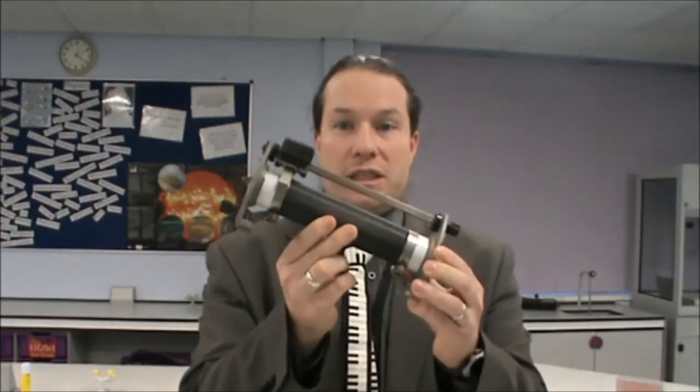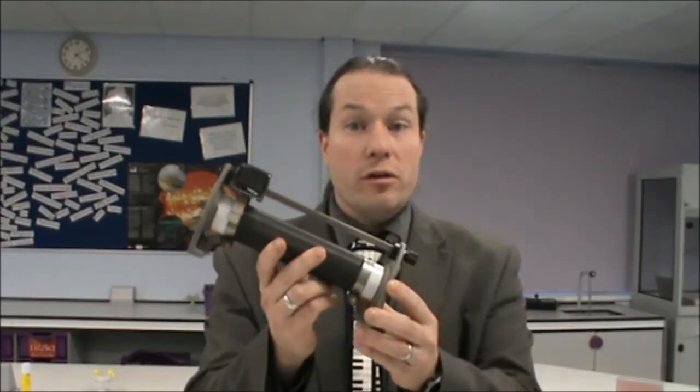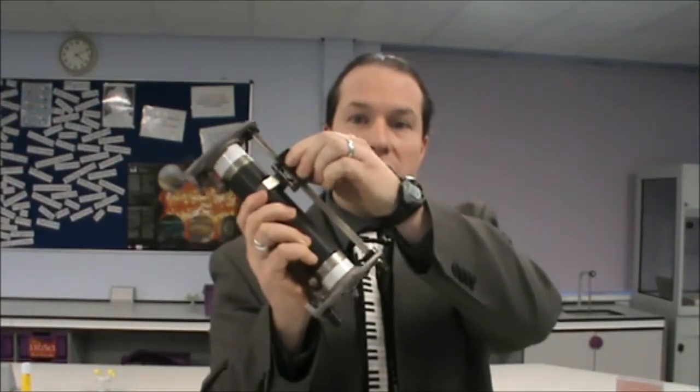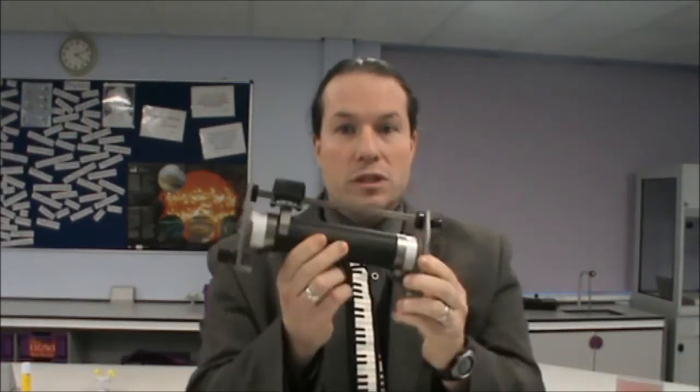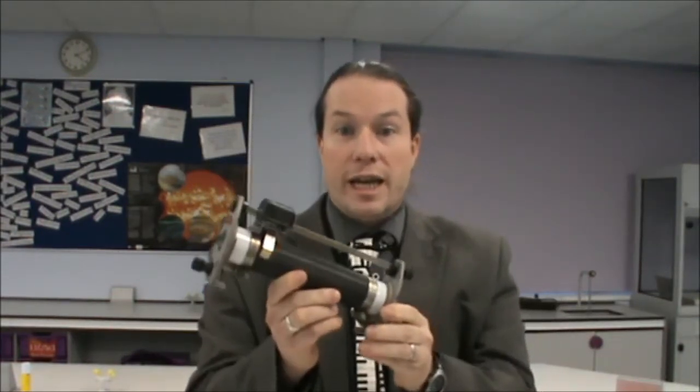The experiment. That wasn't a bad mannequin challenge, was it? Okay, so what we're going to do—we need a variable resistor. Okay, this is also known as a rheostat. We can change the resistance of this by sliding this along here. We're going to use this to control the voltage in our circuit.